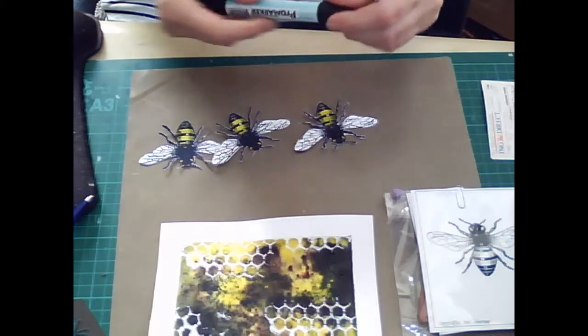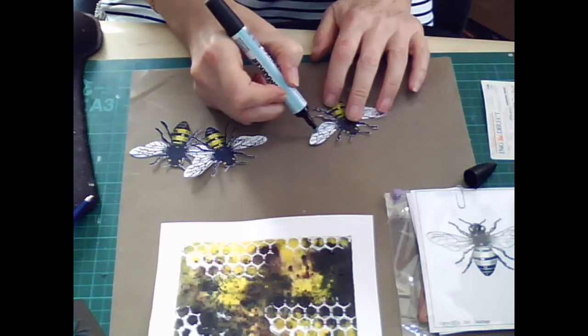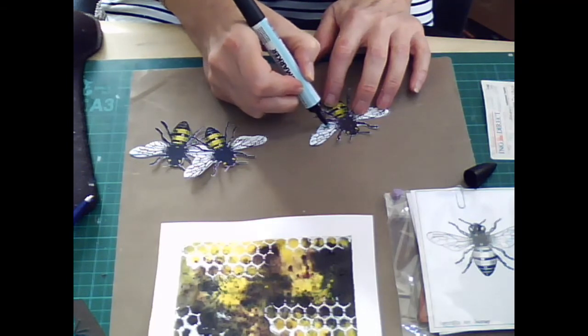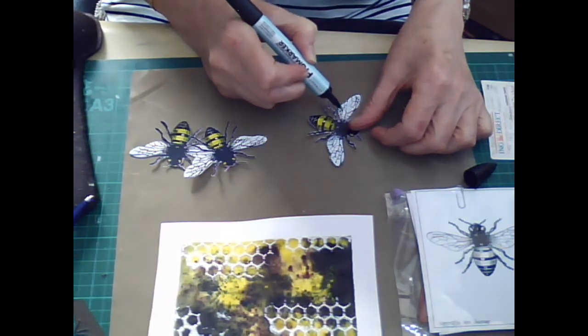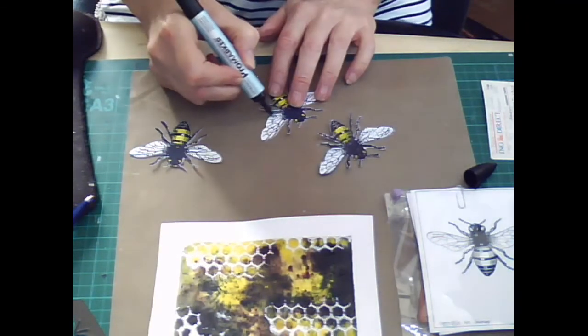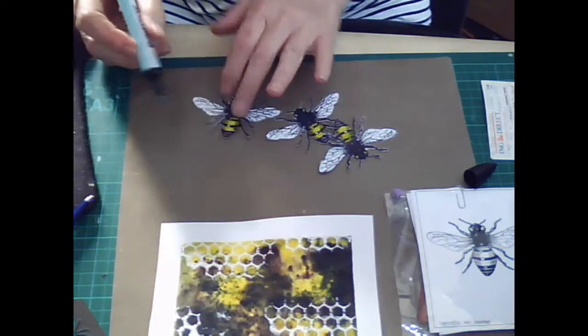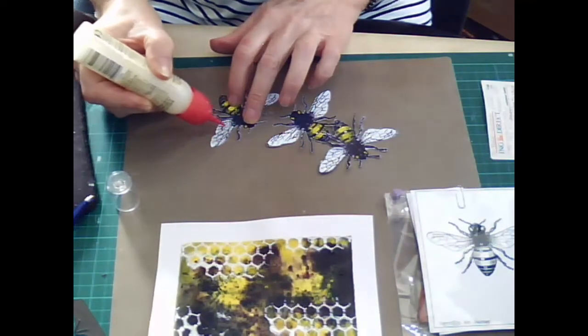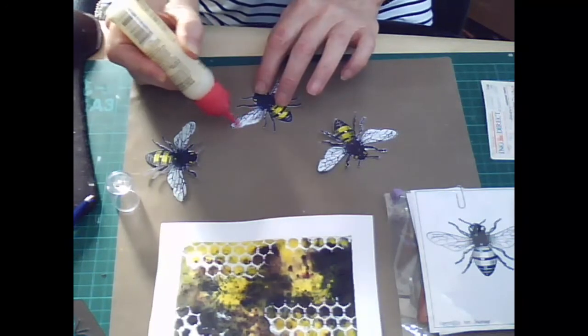I'm now going to take Promarker in Cool Aqua and just go over the wings a bit in a sort of sketchy manner, just to sort of create a bit of a look of see-through wings really. It just sort of gives them a bit of a glassy reflection. Once I've done that I'm going to add some Anita's 3D Clear Gloss Finish to give them, to give the wings a glass look. It's a bit like Glossy Accents but slightly more liquid.